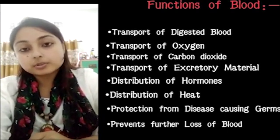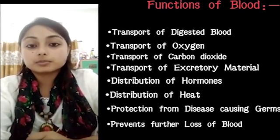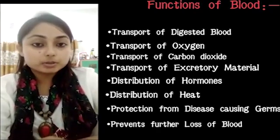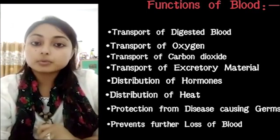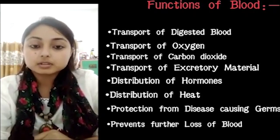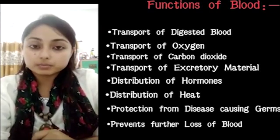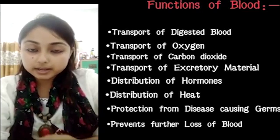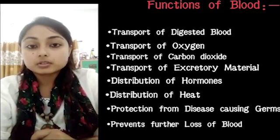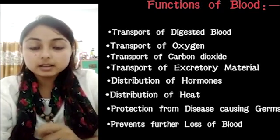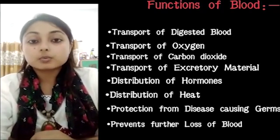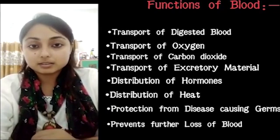Blood also helps in the transport of carbon dioxide from the tissues to the lungs, from where it is given out. It helps in the distribution of heat — blood keeps the body temperature uniform by distributing heat. It also provides protection from disease-causing germs, which is the function of the WBCs or white blood cells. Similarly to how RBC is called erythrocyte, WBC or white blood cell is called leukocyte.